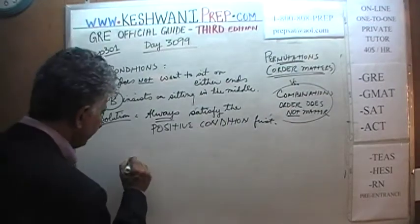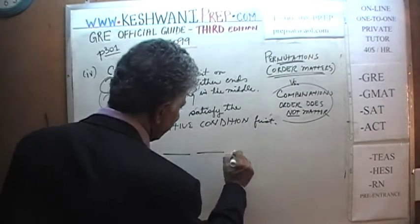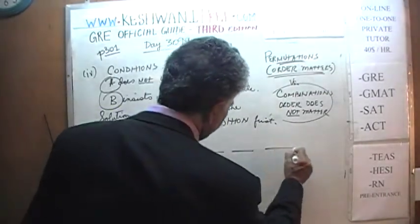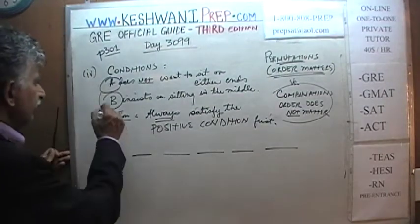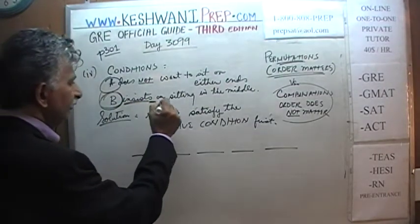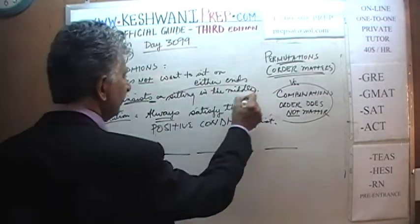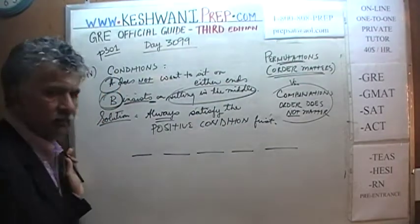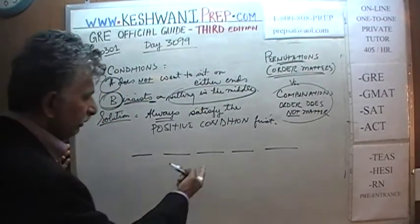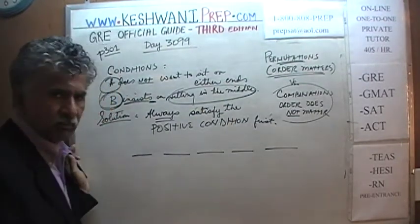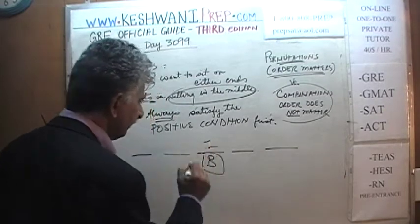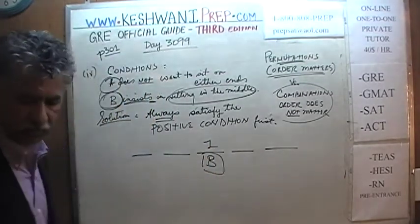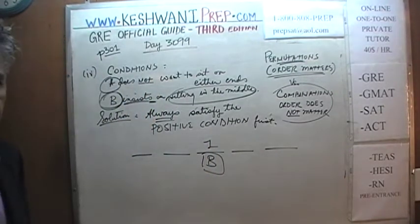Here are the five places: one, two, three, four, and five. We go systematically. The positive condition is that B insists on sitting in the middle. That narrows it down — how many people can go in the middle? Just B. There is only one way we can fill up the middle spot. It's done.